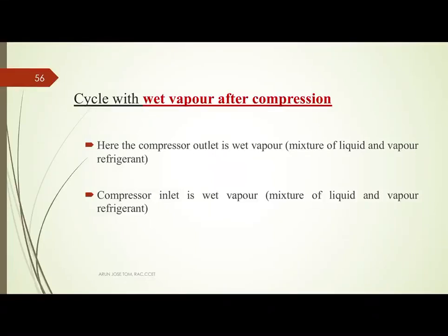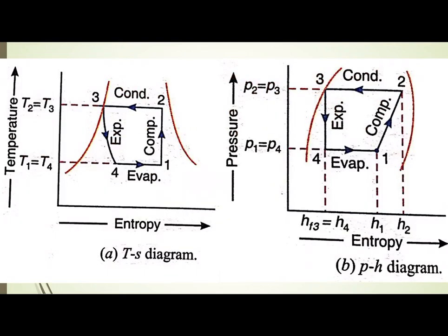Today we discuss the vapor compression refrigeration system with wet vapor after compression. Here, the exit of the compressor is wet vapor — that is point 2. The condition of the refrigerant at point 2 is wet vapor, meaning a mixture of liquid and vapor refrigerant. The compressor inlet is also wet vapor, a mixture of liquid and vapor refrigerant.